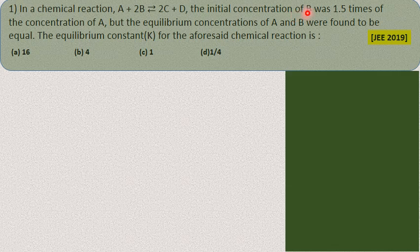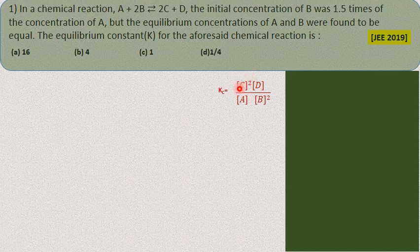The initial concentration of B is 1.5 times that of A, and at equilibrium the concentrations of A and B are equal. These concentrations are given indirectly. From this we have to calculate the equilibrium constant Kc. The expression for Kc is the product of molar concentrations of products divided by that of reactants. Products are C and D; reactants are A and B.